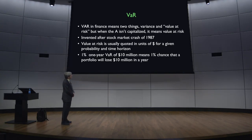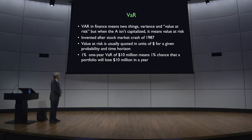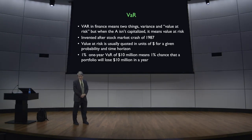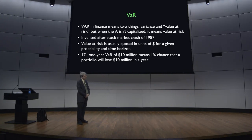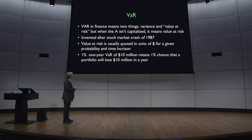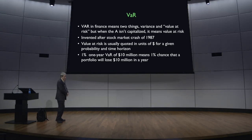Value at risk didn't appear until after the stock market crash of 1987. It's a measure used by some finance people to quantify the risk of an investment or portfolio, quoted in units of dollars for a given probability and time horizon. For example, a 1% one-year value at risk of $10 million means there's a 1% chance the portfolio will lose $10 million in one year.